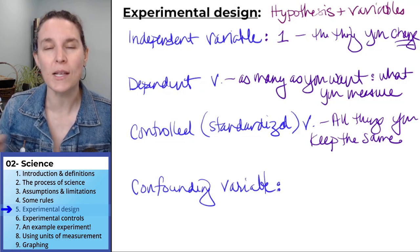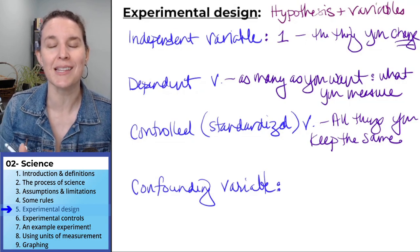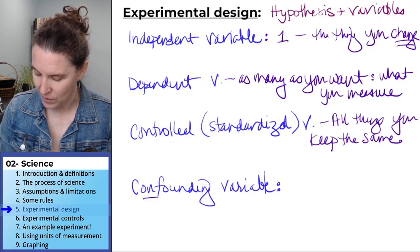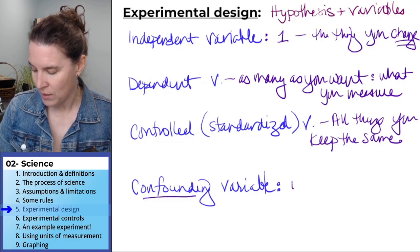The last one, once a variable is determined that it can't be controlled, it becomes a confounding variable, uncontrollable.